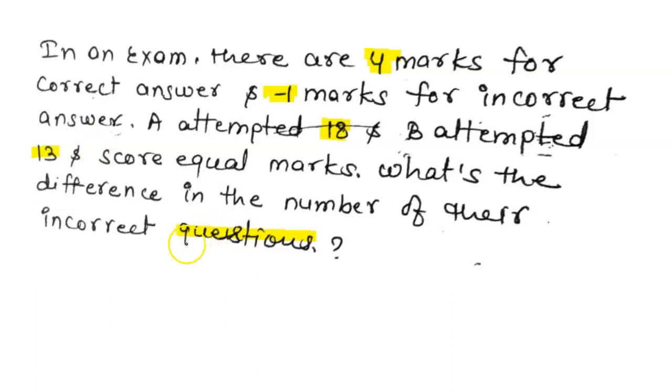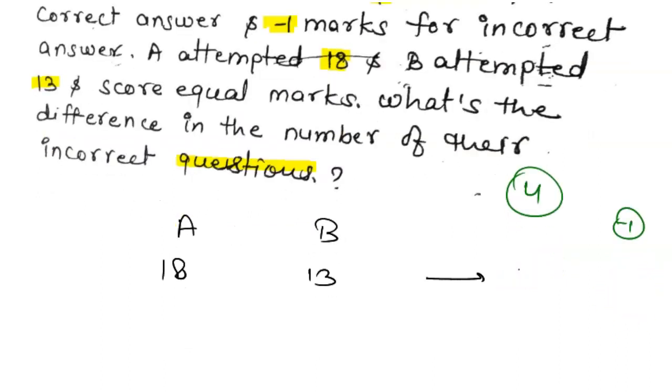So here we see A attempted total 18 questions and B attempted total 13 questions, and both have the same number. The correct answer is 4 marks and the incorrect answer is minus 1. So here we see if we consider A has 14 correct questions, we have 14.